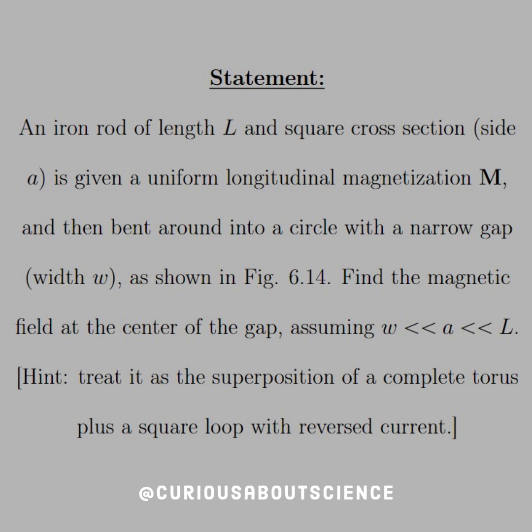The author gives a hint, treated as a superposition of a complete torus, plus a square loop with a reverse current. That hint is amazing, by the way. You'll see it come to fruition really quickly.